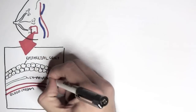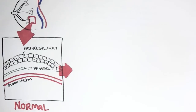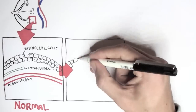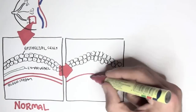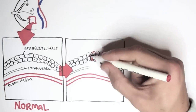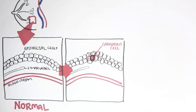Now let us learn about the pathophysiology and progression of cancer and how it can spread. These epithelial cells can turn into cancer cells through environmental factors, genetic mutations, or even an infection. When healthy epithelial cells become cancerous, it causes the tissue to become abnormal.